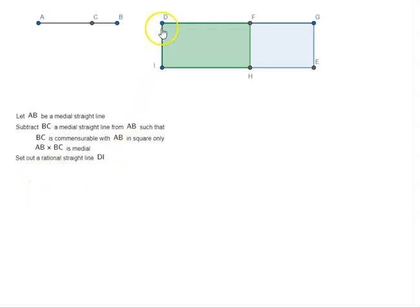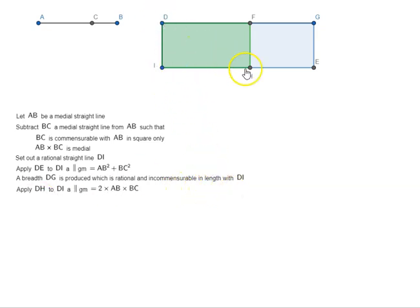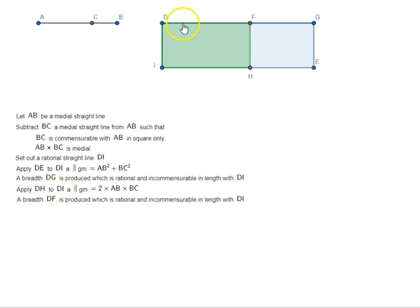Set out a rational straight line DI. Apply BE to DI, a parallelogram equal to AB² + BC². When we apply that area, a breadth DG is produced which is rational and incommensurable in length with DI. We then apply DH equal to 2 times AB·BC to DI, and a breadth DF is produced which is rational and incommensurable in length with DI.